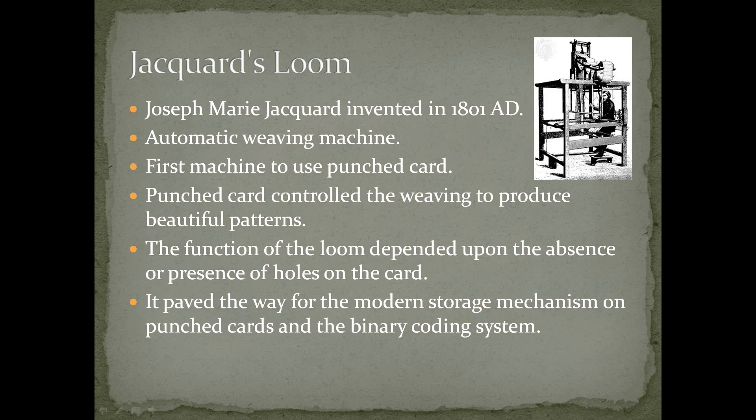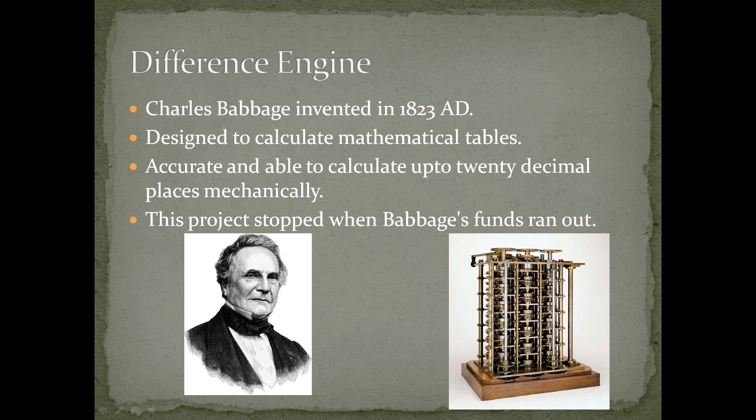Jacquard's loom was invented by Joseph Marie Jacquard in 1801 A.D. It is an automatic weaving machine and was the first machine to use punch cards. Punch cards controlled the weaving to produce beautiful patterns. The function of the loom depended upon the absence or presence of holes on the card. It paved the way for the modern storage mechanism on punch cards and the binary coding system.